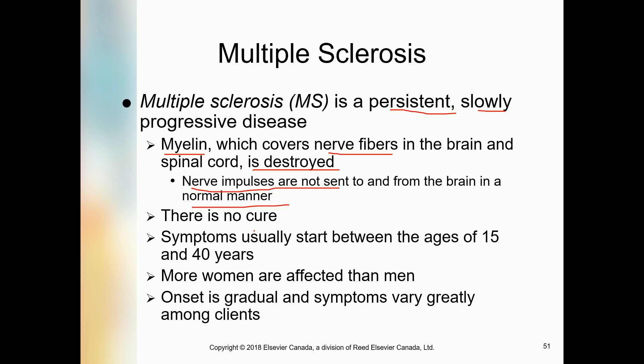There is no cure — this is a very sad aspect of this disease. Symptoms usually start between the ages of 15 and 40 years. More women are affected than men. Onset is gradual and symptoms vary greatly among clients, depending on co-conditions as well.